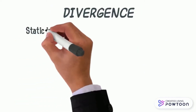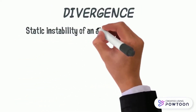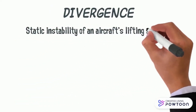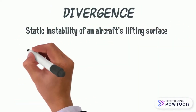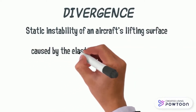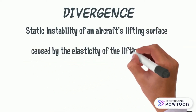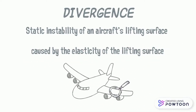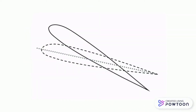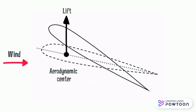Divergence is a static instability of an aircraft's lifting surface caused by the elasticity of the lifting surface, such as a wing. From the wing section of an aircraft, when the aircraft is moving forward, lift will be generated at the point of the aerodynamic center, due to the difference in pressure.